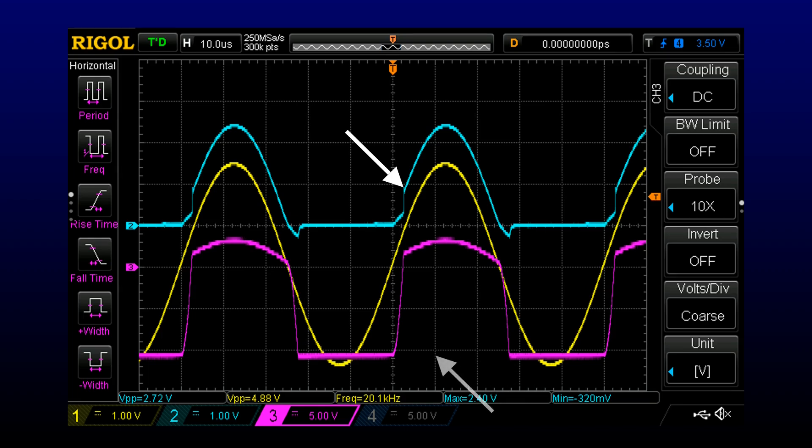If we look at the op-amp output, we can see the problem. It takes the output a certain amount of time to climb from the negative rail to half a diode drop above the input. It took about a microsecond and a half to climb the 13 volts or so. Then the diode started conducting, and the output jumped to the correct level.